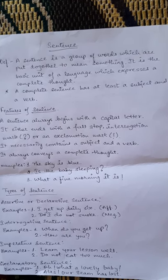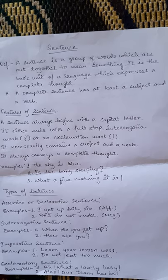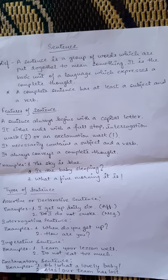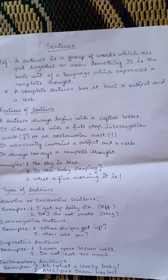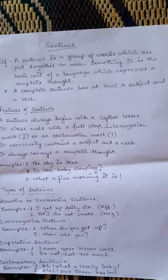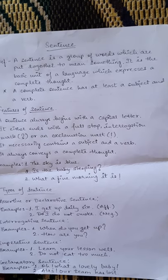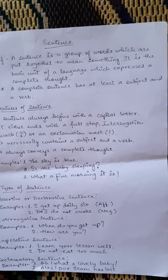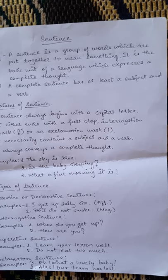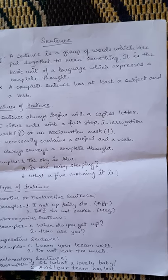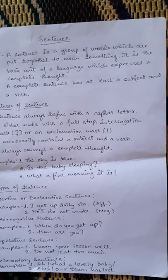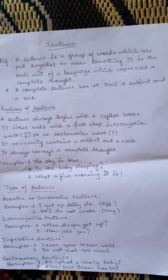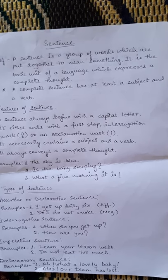A group of words are known as a sentence. What is the definition of sentence? A sentence is a group of words which are put together to mean something complete. It is the basic unit of a language which expresses a complete thought. A complete sentence has at least a complete subject or a verb. Without a subject or a verb, a sentence cannot be meaningful.